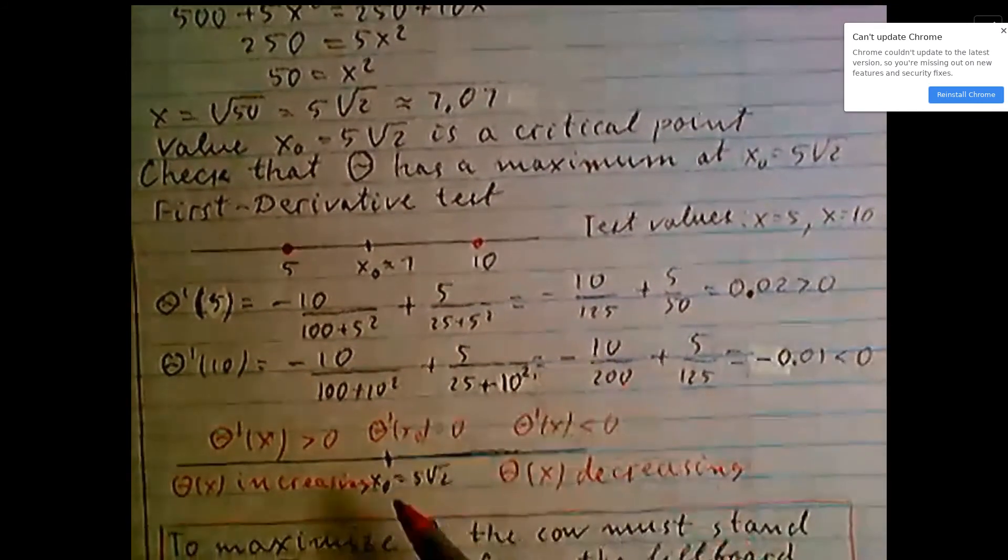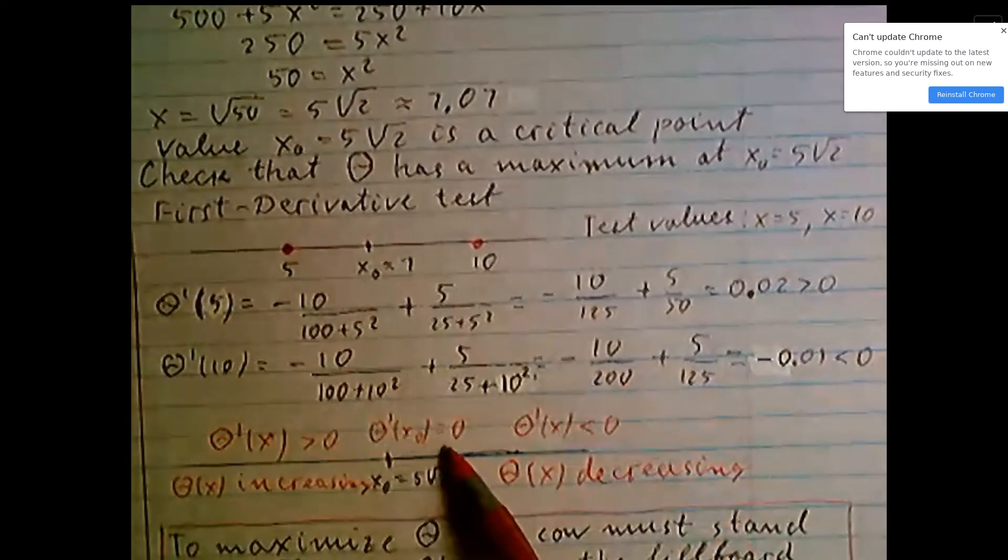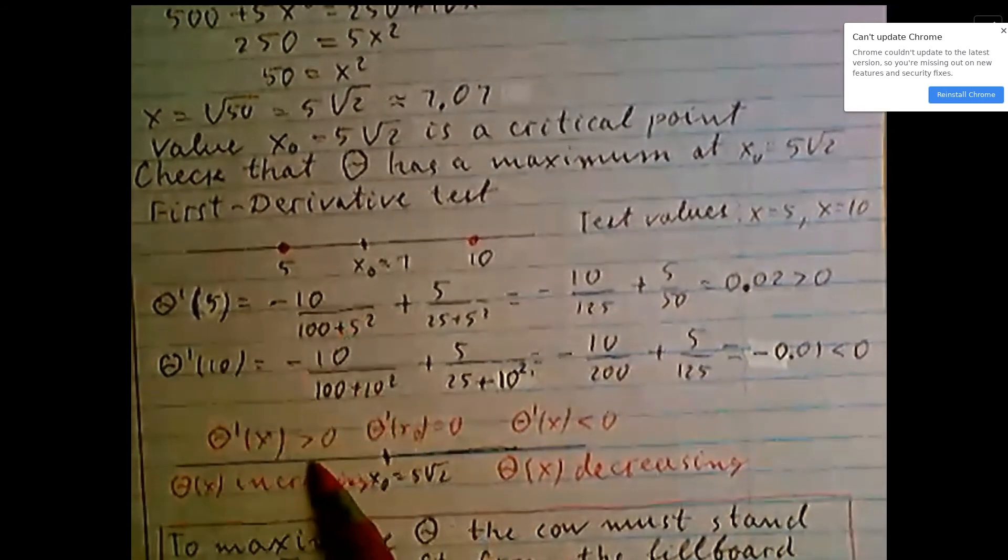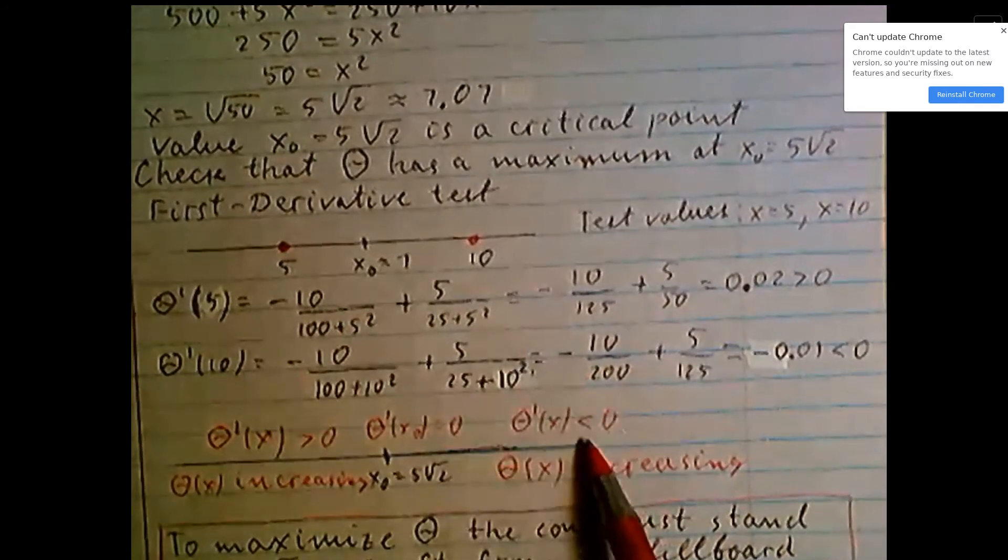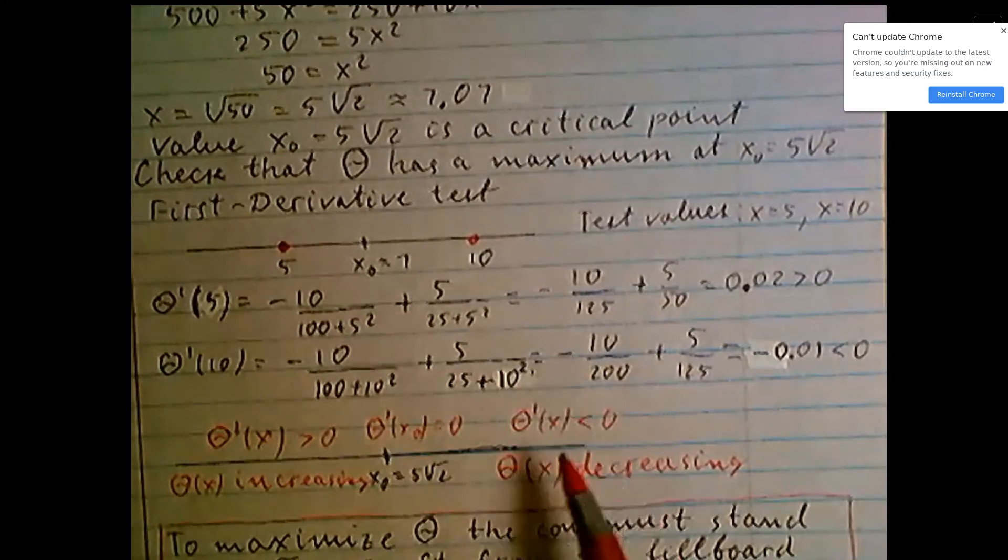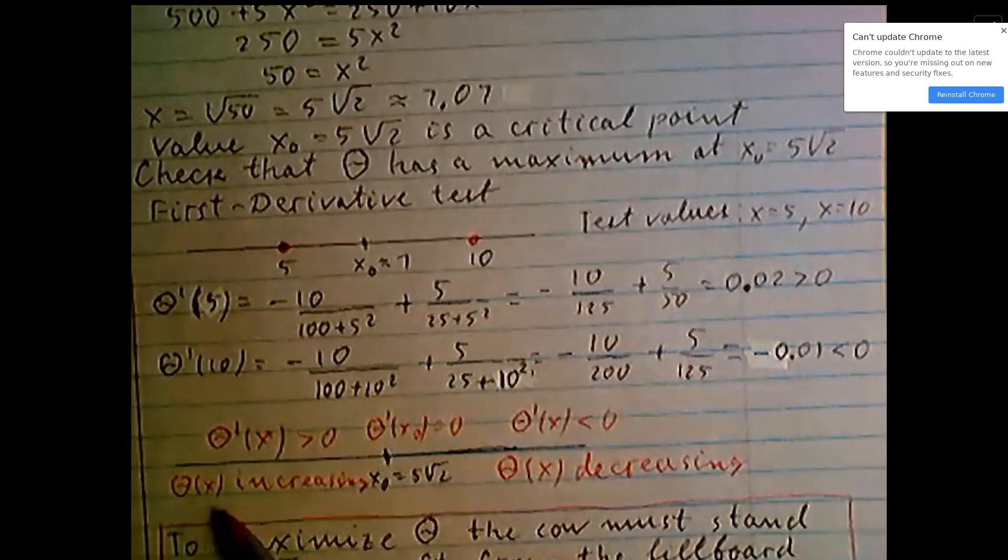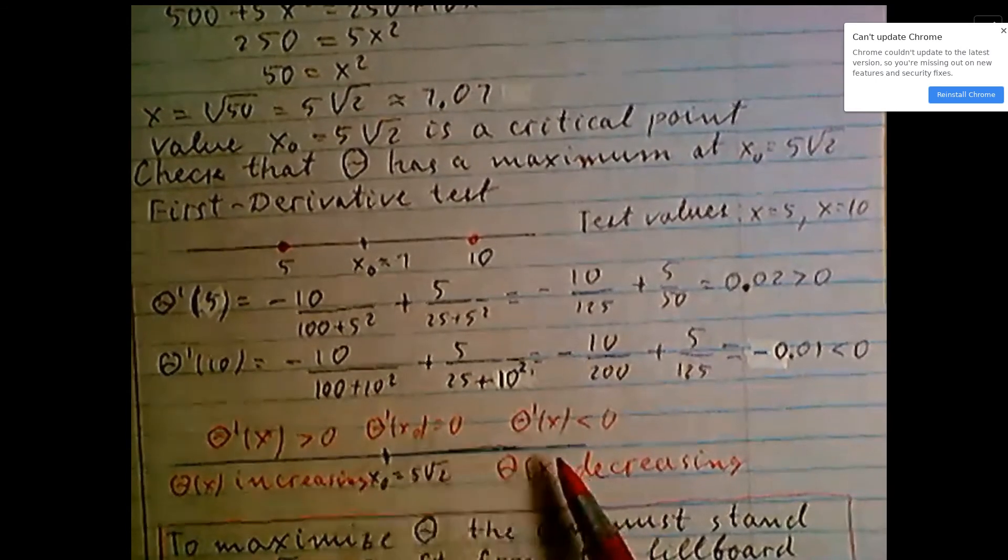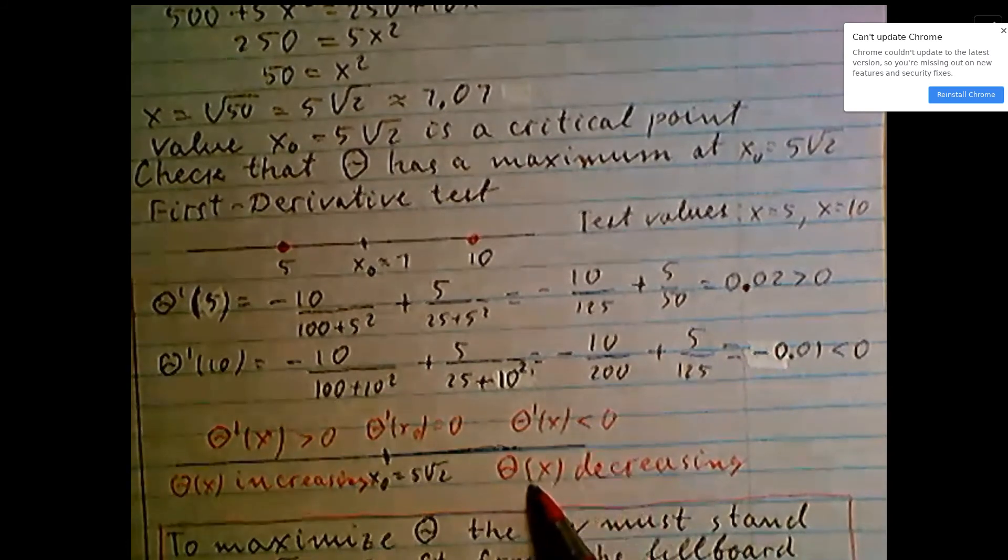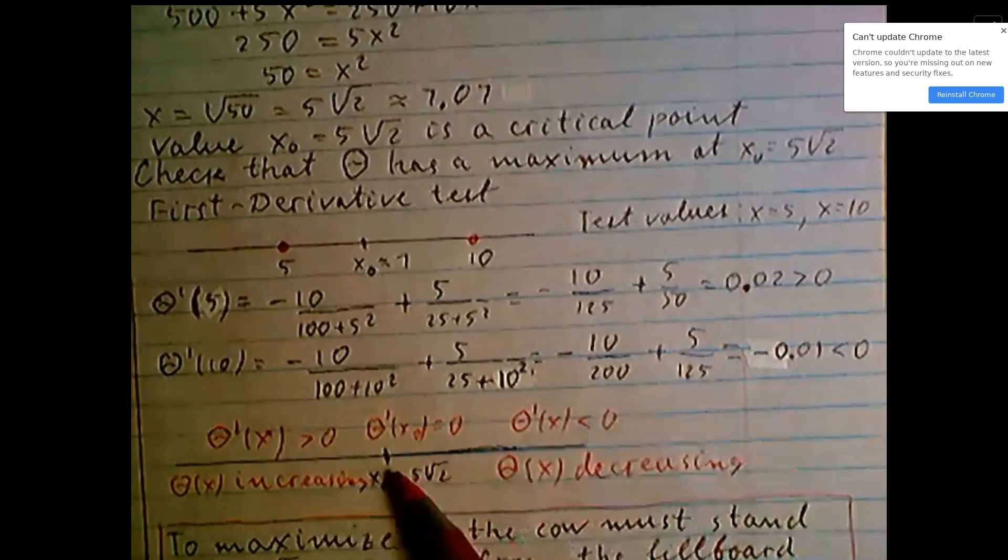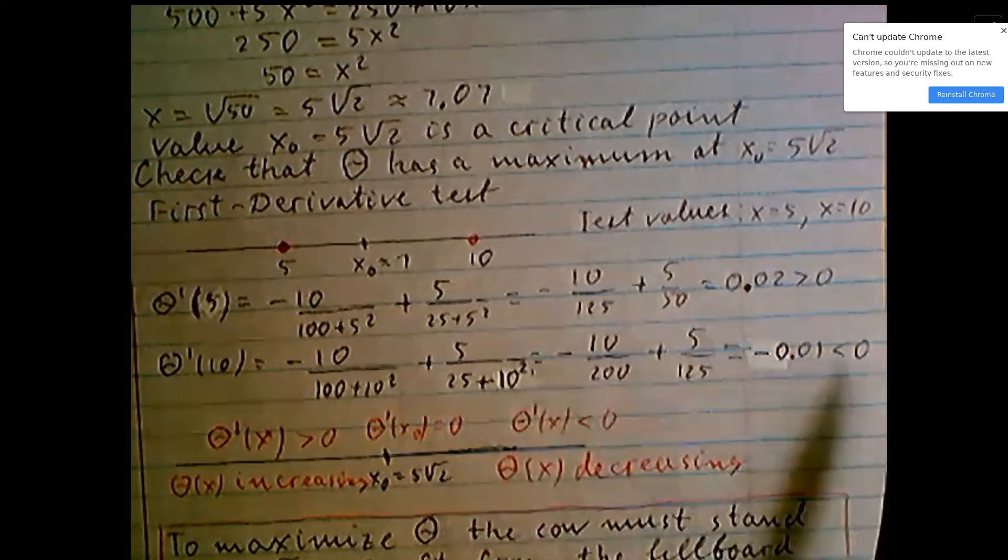So at this critical point derivative equal 0. To the left test point, derivative greater than 0. To the right, derivative less than 0. Derivative greater than 0 means theta of x is increasing. Derivative less than 0 means theta of x is decreasing. So really, this point x₀ is a point of maximum.